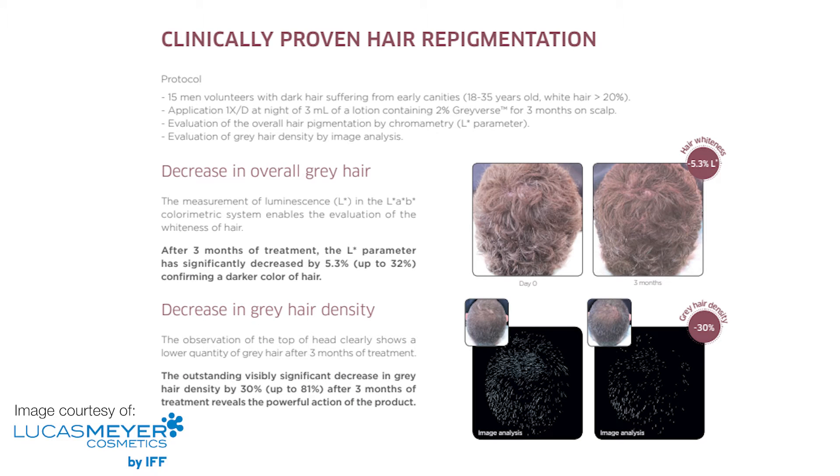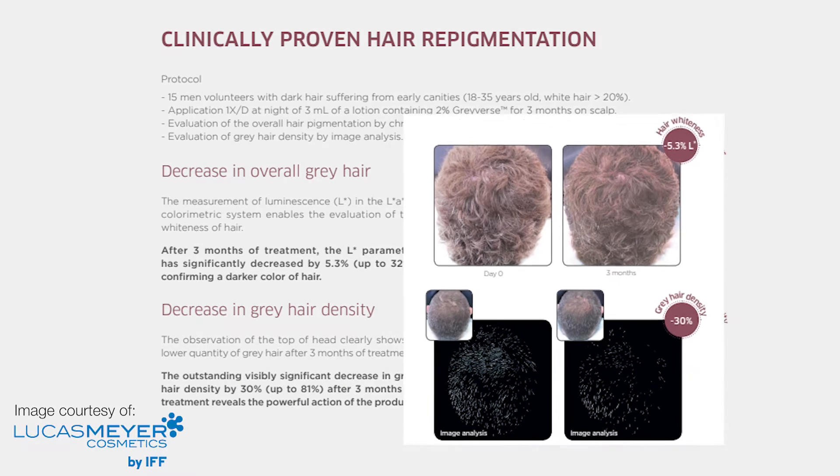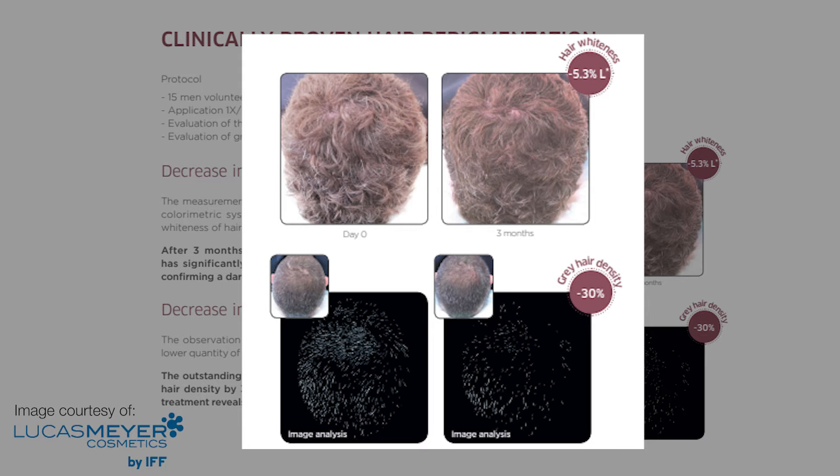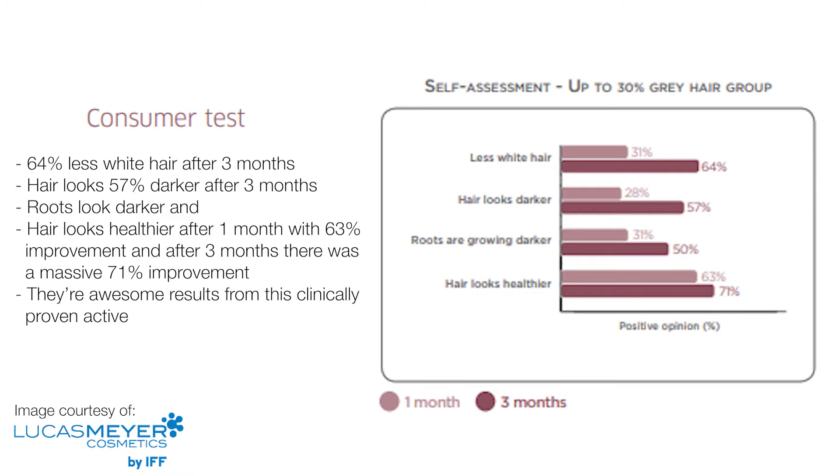Over to some more clinically proven results and you can see here in the photos there's been a decrease in hair whiteness by 5.3% which is pretty good. So there was a decrease in overall grey hair after three months of treatment which is really good. And then you can see in this other photo here there was a decrease in grey hair density. So the observation of the top of the head shows a lower quantity of grey hair after three months of treatment. So you can see after one month there was less white hair by 31% and after three months there was less white hair by 64% which is huge.